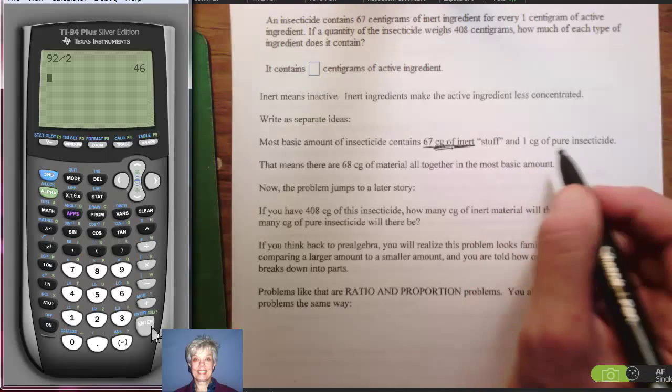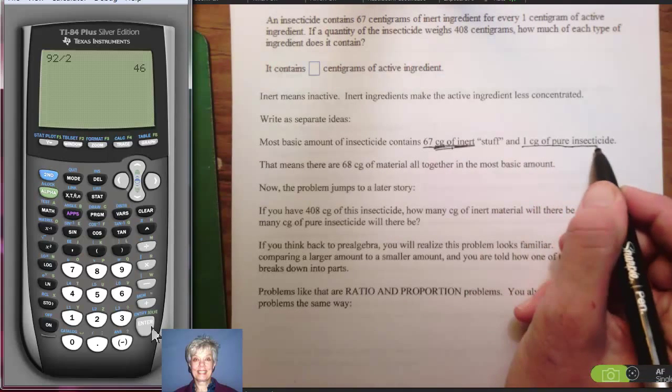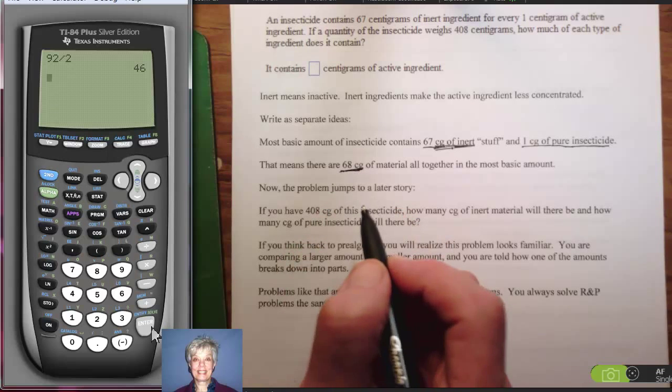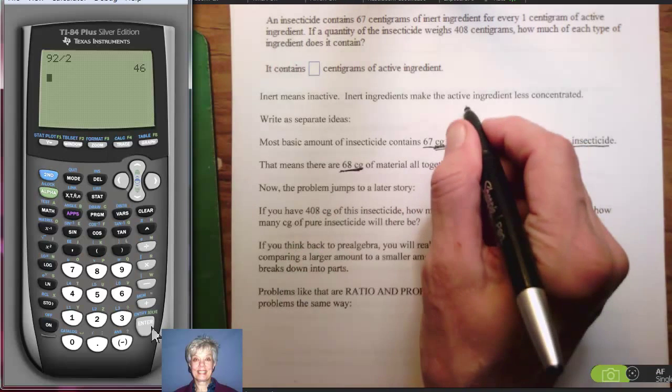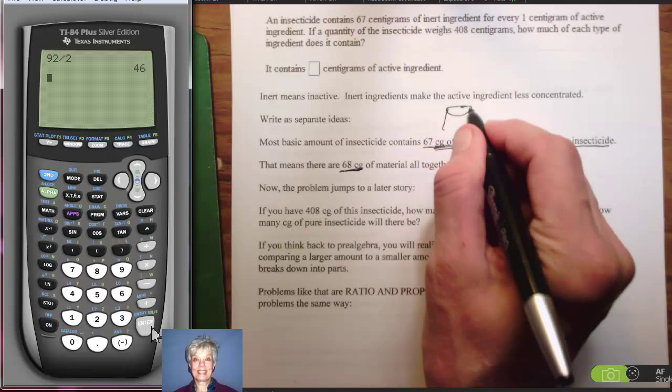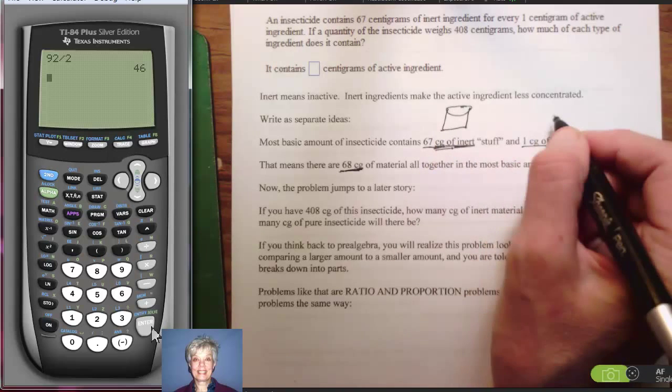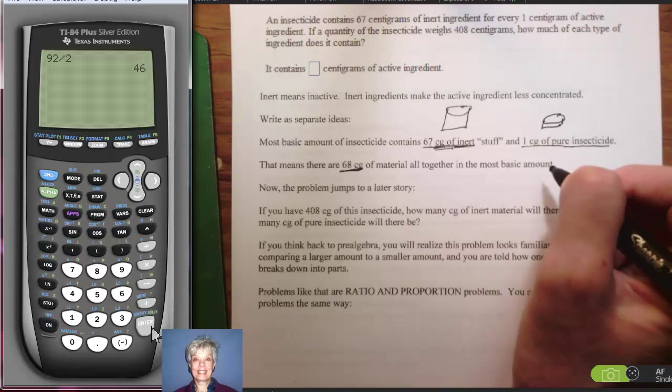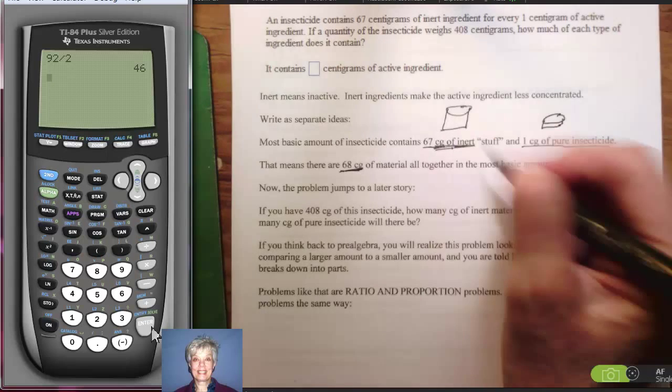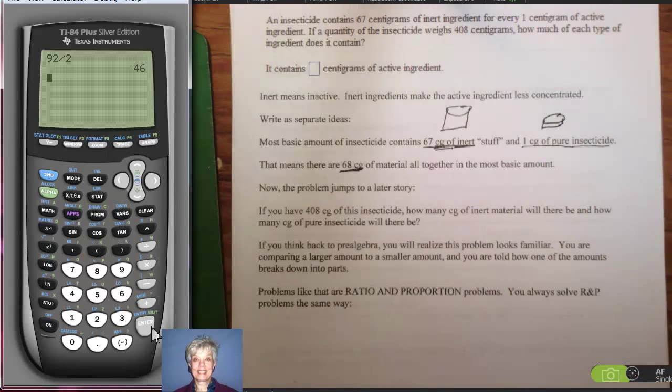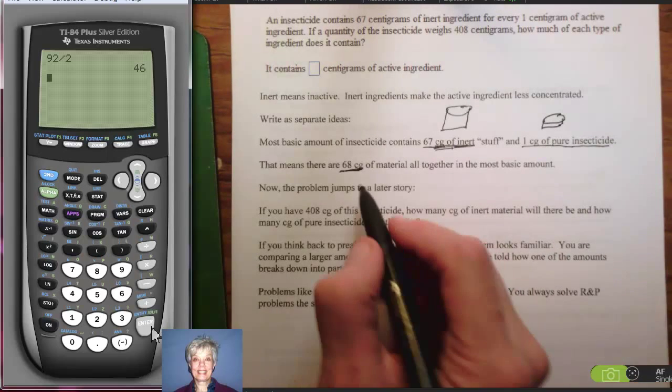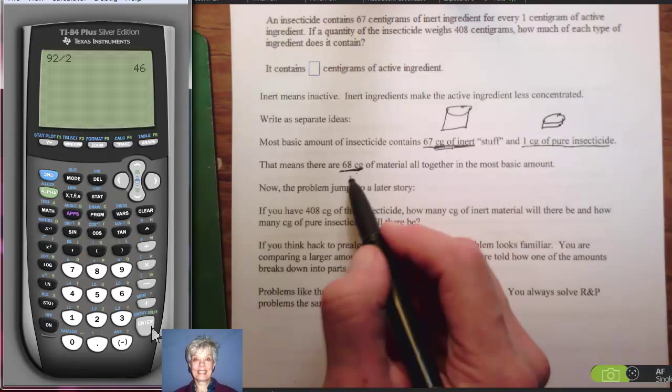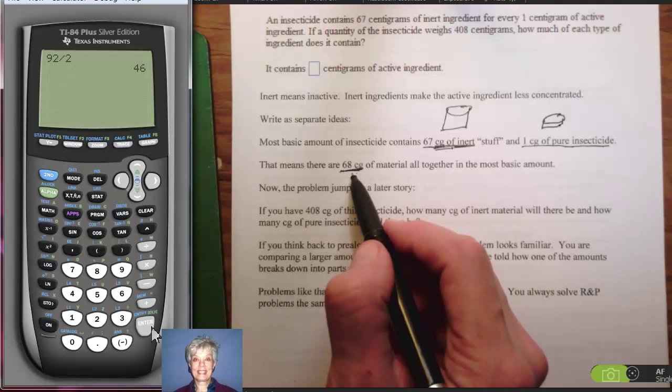So you've got 67 centigrams of inert material. You've got 1 centigram of insecticide. So altogether, you've got 68 centigrams. Now you've got more of the inert material than you do of the active. Those are supposed to be containers. They're not very convincing, are they? But together, you've got 68. If you've got 67 inert and 1 pure, then you've got 68 altogether.